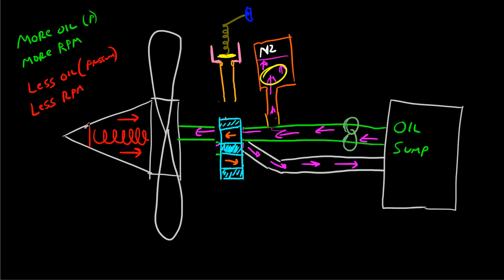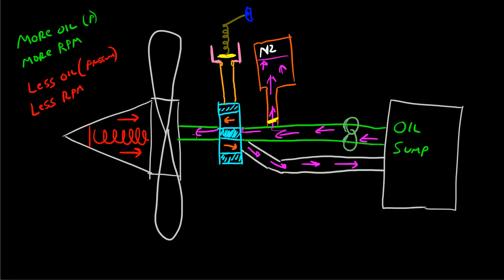Once the prop starts up, oil flows back into the unfeathering accumulator, the pressure builds back up again, and the pilot valve moves back into the neutral position. So there you have it — the prop system diagram for the PA-44.